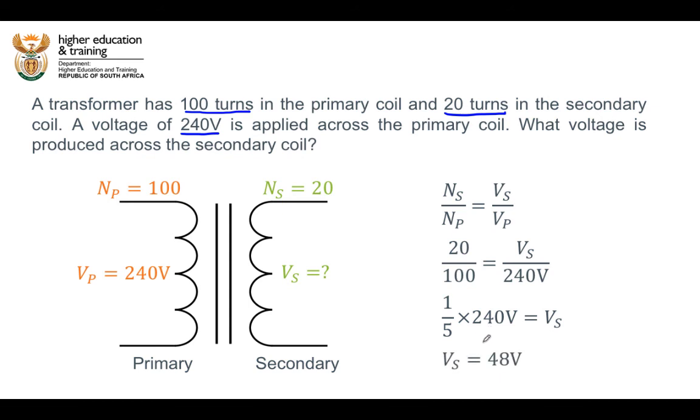So simply solving for that tells us that the voltage across the secondary coil is equal to 48 volts and we are done.